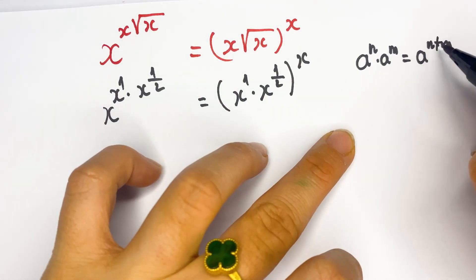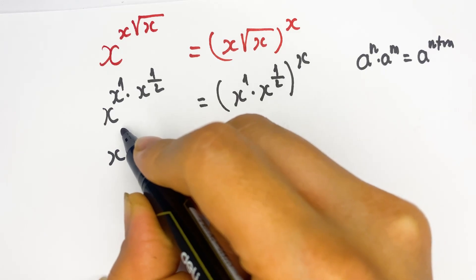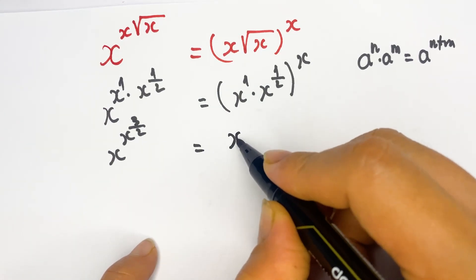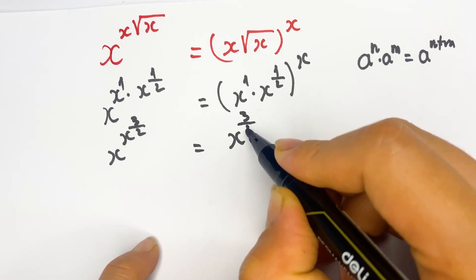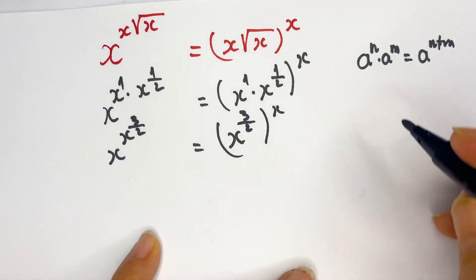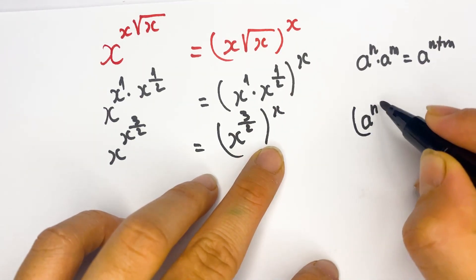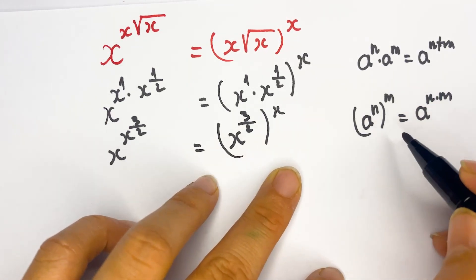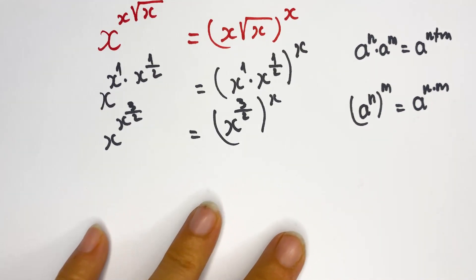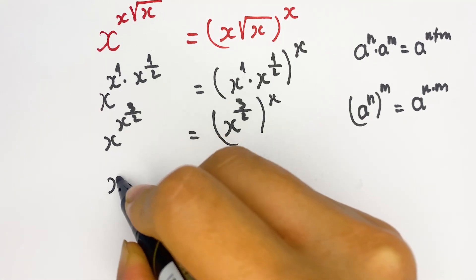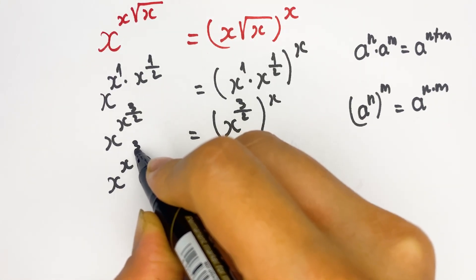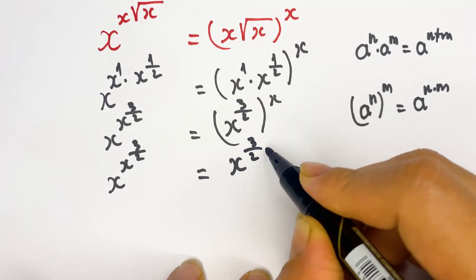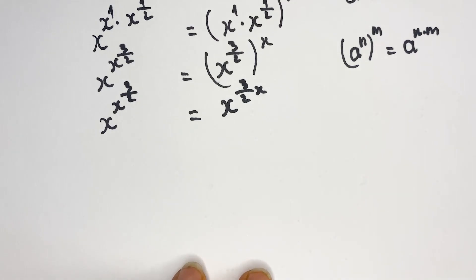So you can say x^x · x^(3/2), which equals x^(3/2) whole power x. The property of exponential rules states that (a^n)^m equals a^(n·m). So here you can write x^(x · (3/2)) equals x^(3/2 · x).